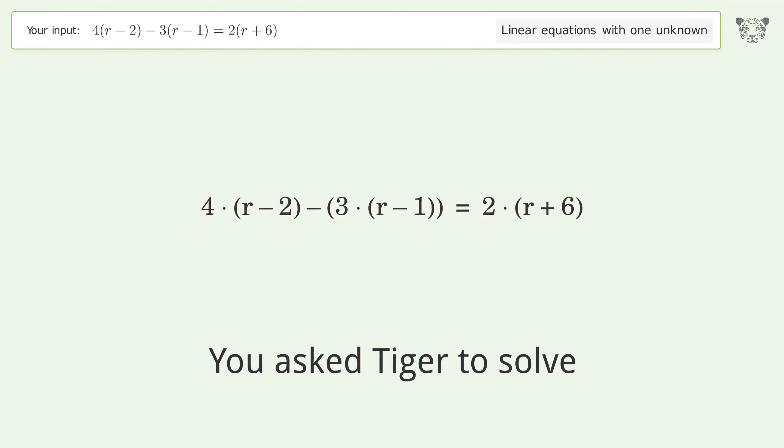You asked Tiger to solve this. It deals with linear equations with one unknown. The final result is r equals negative 17.